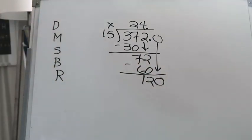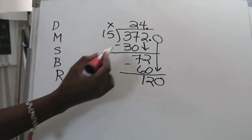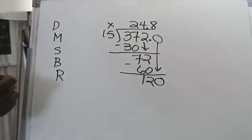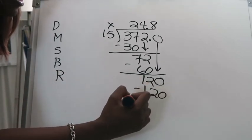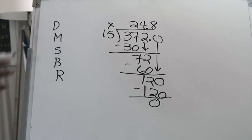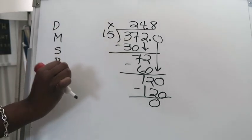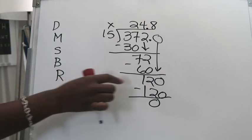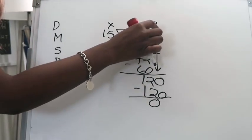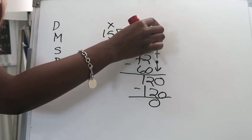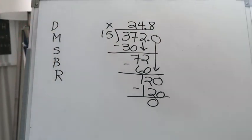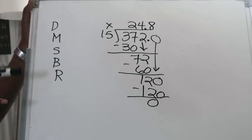I already know that 15 goes into 120 eight times. 8 times 15 is exactly 120 and 120 minus 120 is zero. So now the quotient to 372 divided by 15 instead of me writing it as 24 remainder 12 which is what it would have been I can express my remainder 12 as a decimal. So this 8 tenths is your remainder but just in decimal format. I'm going to flip my camera around and then I'll give you my closing thoughts.